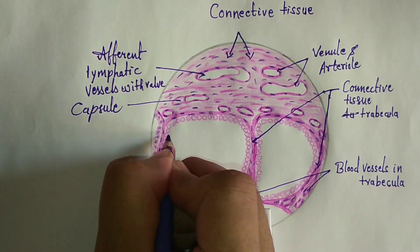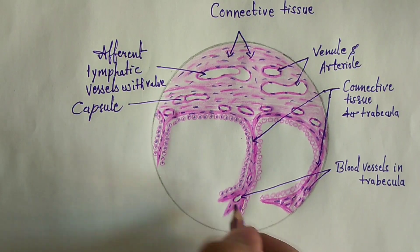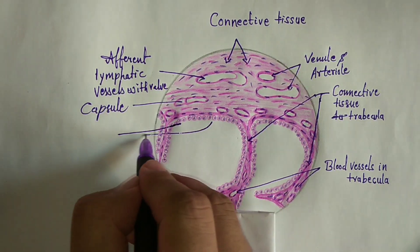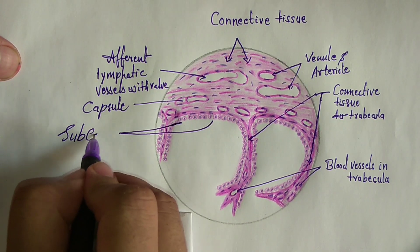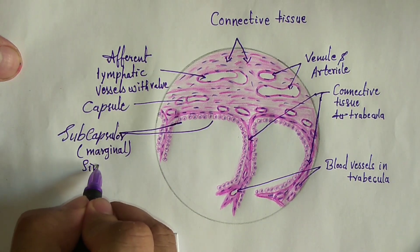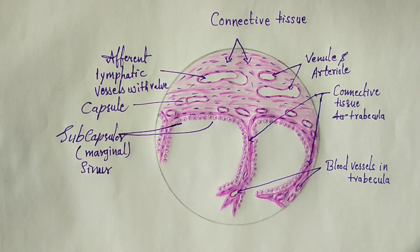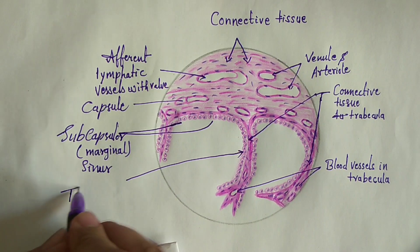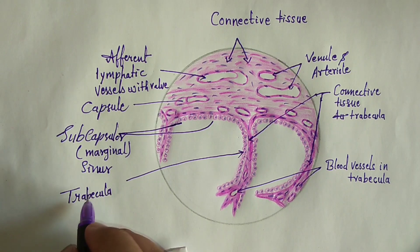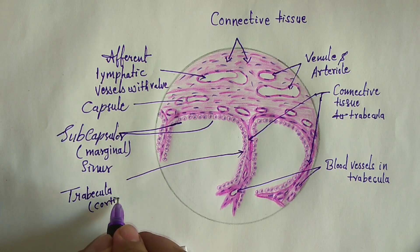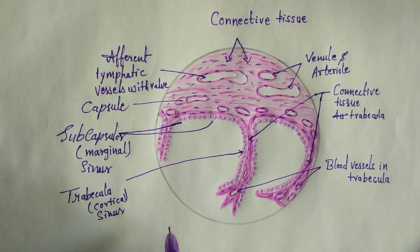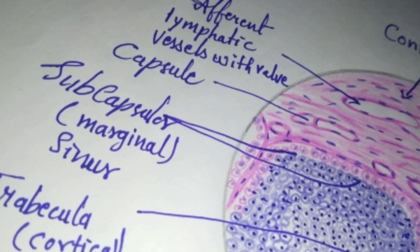Now we are making the subcapsular sinuses, also called marginal sinuses. The cortex of the lymph node is separated from the connective tissue capsule by the subcapsular sinuses. The cortex consists of lymphatic nodules situated adjacent to each other but incompletely separated by internodular connective tissue — that is, trabeculae and the trabecular or cortical sinuses.